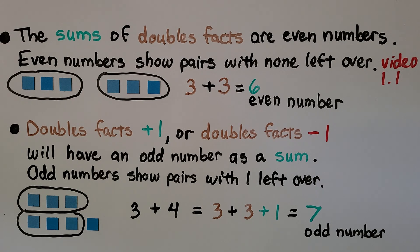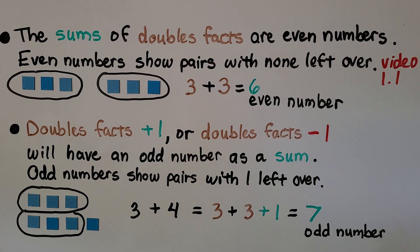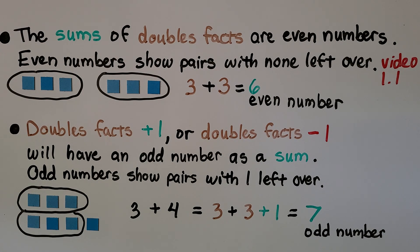The sums of doubles facts are even numbers. Even numbers show pairs with none left over — we learned about that in video 1.1. For example, 3 plus 3 equals 6, and 6 is even because we can make pairs with none left over. Doubles facts plus 1 or minus 1 will have an odd number as a sum. Odd numbers show pairs with 1 left over. So 3 plus 3 equals 6 is even, but 3 plus 4 — which is 3 plus 3 plus 1 — equals 7, which is odd.